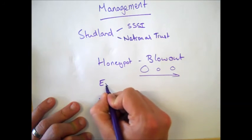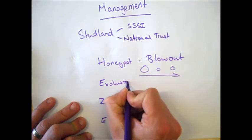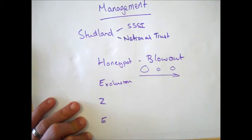The E stands for exclusion. This is where certain parts of Studland Bay are actually fenced off or sort of banned from people being able to enter them. This means that these particularly vulnerable areas aren't subject to people walking over the vegetation and disturbing the wildlife, so they're excluded from that area.